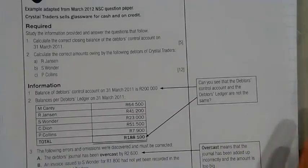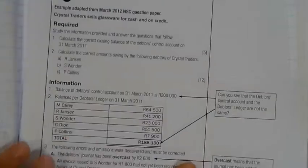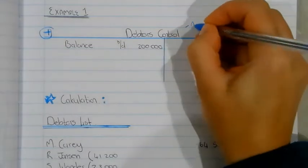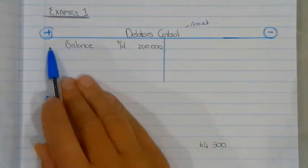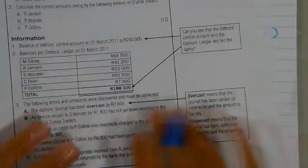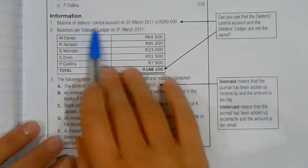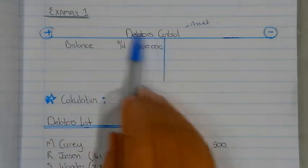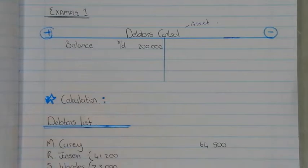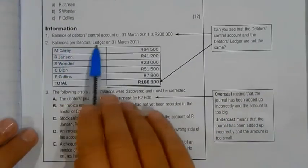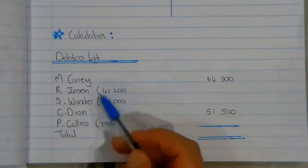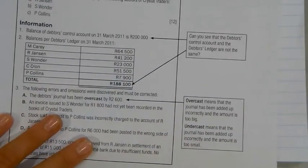I'm going to do example one, taken from Mind the Gap, which is a Grade 12 book. Debtors reconciliation is a topic handled in Grade 12. Remember, debtors control is an asset and therefore it will increase on the debit side and decrease on the credit side. They give the balance of my debtors control account as 200,000 on the 31st of March, entered on the side on which the account increases. For debtors that had no effect I already put the totals there, and for the others I started a bracket with the amount given.